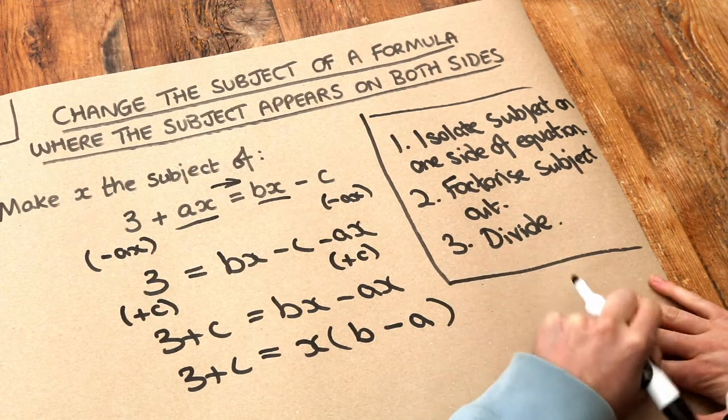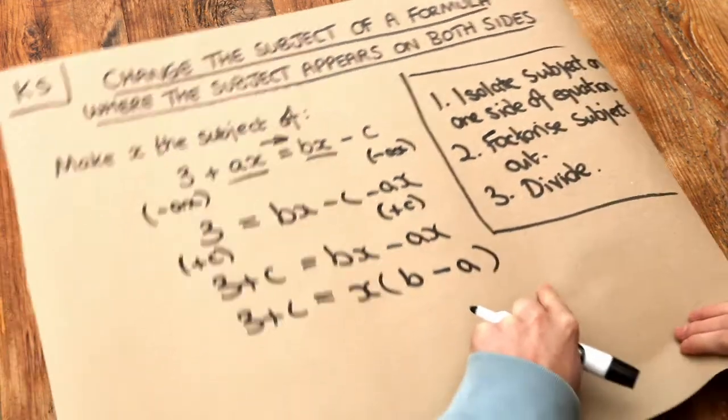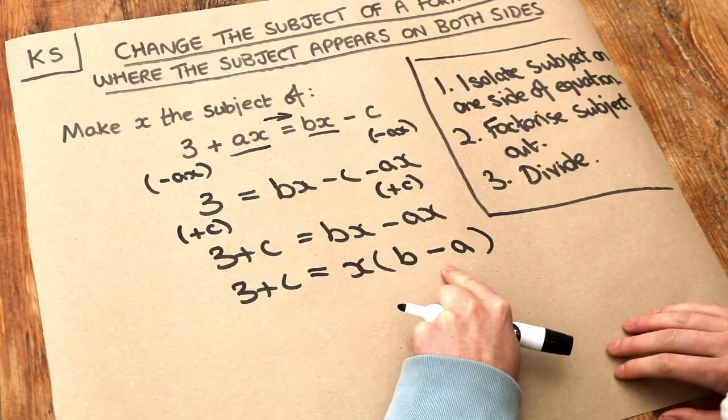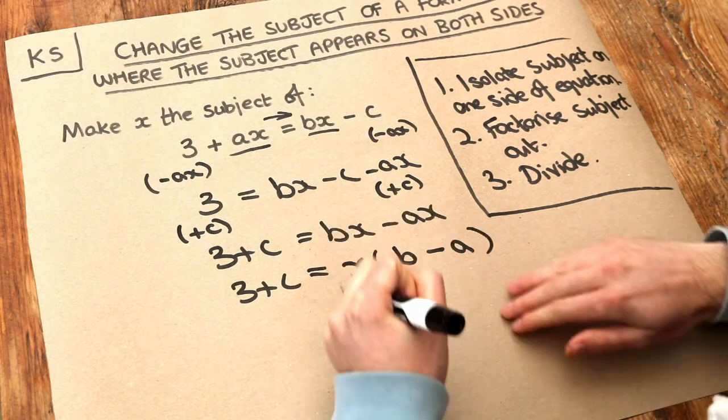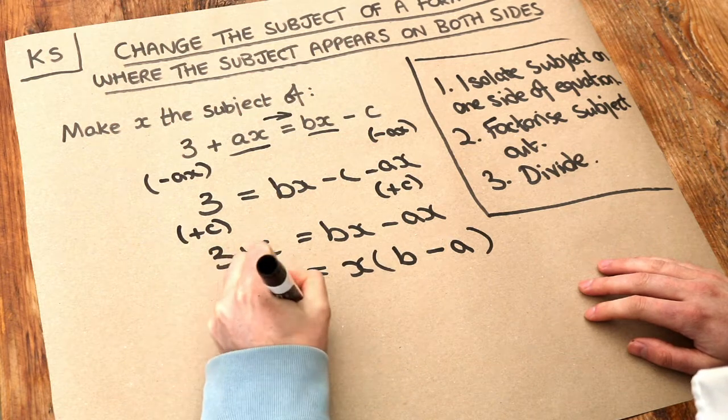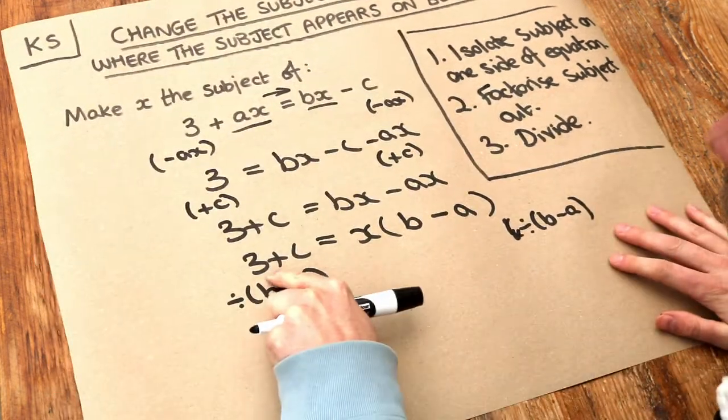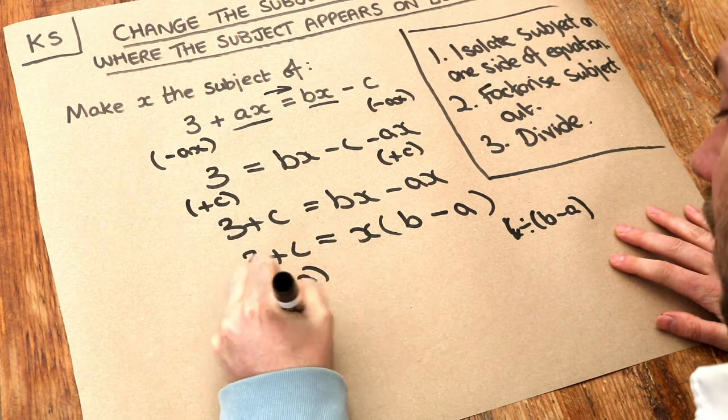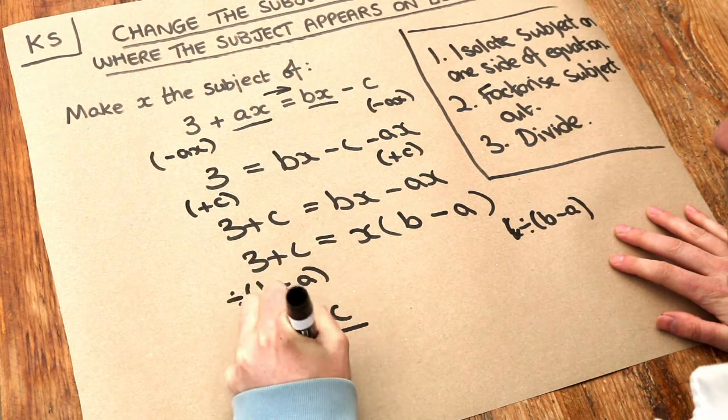And finally we just need to divide appropriately. Can you see that x has been multiplied by b minus a? So to get rid of the times by b minus a we just need to divide both sides by b minus a. So let's do that. If we divide 3 plus c by b minus a we get 3 plus c over b minus a.